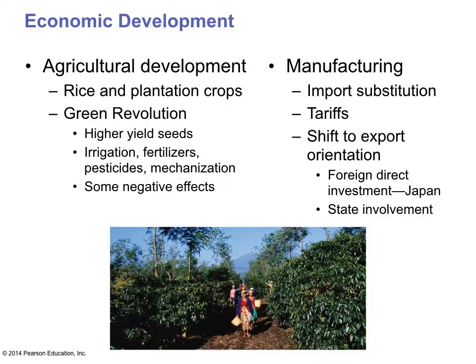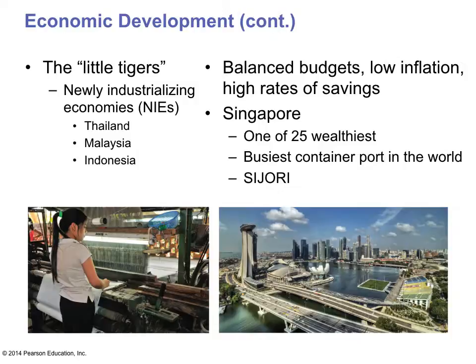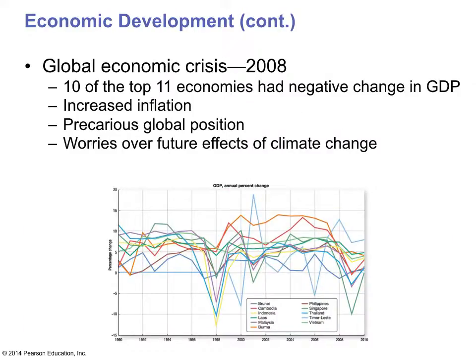Economic development is extremely important here. This is a highly developed part of the world with a growing manufacturing and technology sector moving away toward exports. As a result of the Green Revolution, it is a very prosperous area. Unfortunately, with economic prosperity, the region is also tangled up in global economic crises. In 2008, they had a downturn just like everyone else — ten of the top eleven economies had negative GNP change, with increased inflation. They are also worried about how climate change will affect their agriculture.